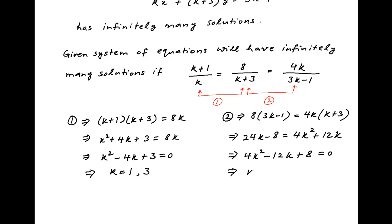Four cancels across the board and we get k² - 3k + 2 is equal to 0, which implies that k is equal to 1 or 2.